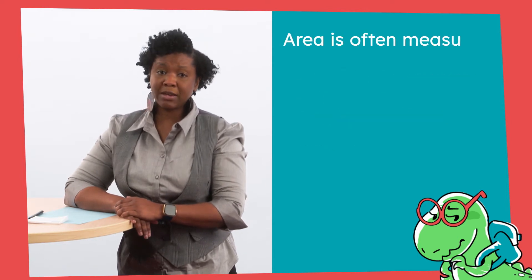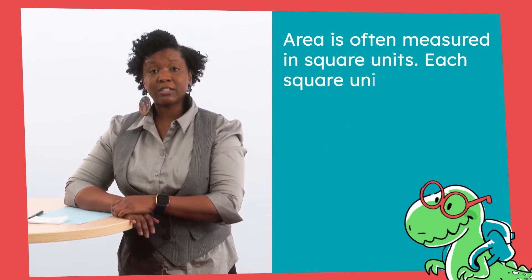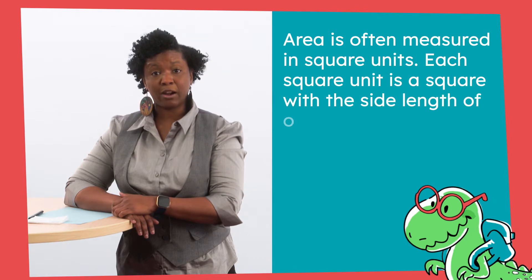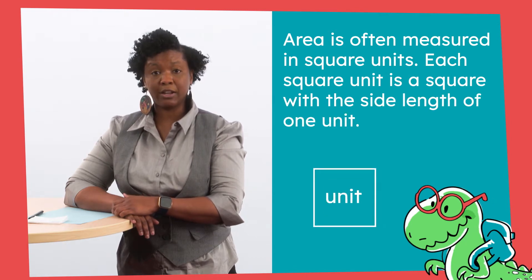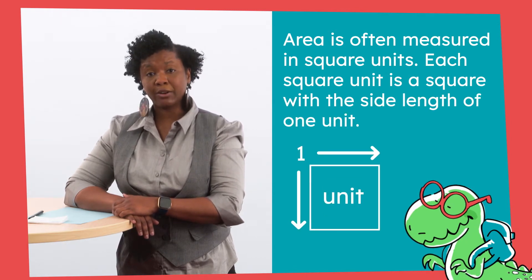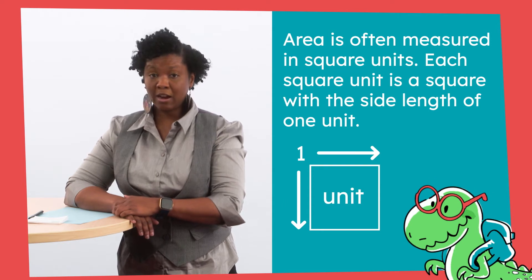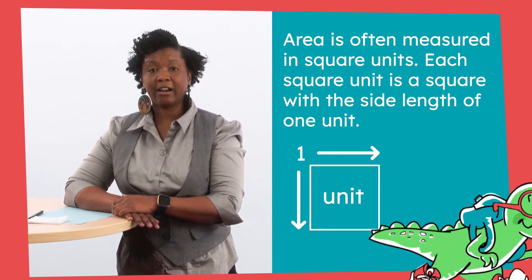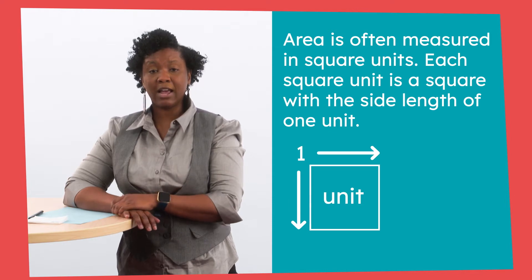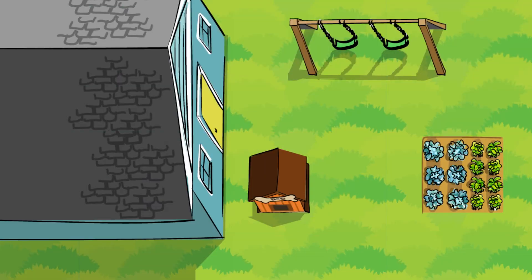If you think about my yard, its area can be thought of as the surface covered by all of the blades of grass within the yard. Counting the blades of grass doesn't seem like an efficient way to determine the area. There has to be a better way. Area is often measured in square units. Each square unit is a square with the side length of one unit. We can use square units to find the area of my yard. Actually, I only want to measure the area of one part of my yard for now. Here we are.